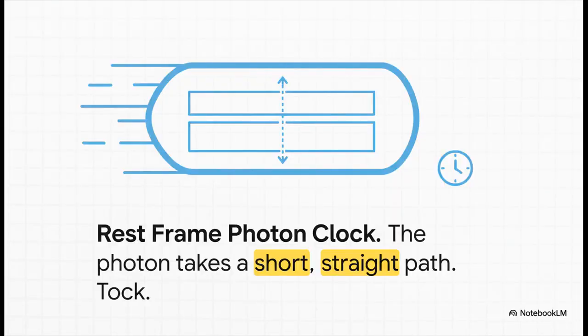Imagine the simplest clock you can. It's just two mirrors facing each other, with a single photon of light bouncing back and forth. Every time the photon hits a mirror, that's one tick. Tick. Tock. If you're right there with the clock, the photon just goes straight up, straight down. Looks perfectly normal.